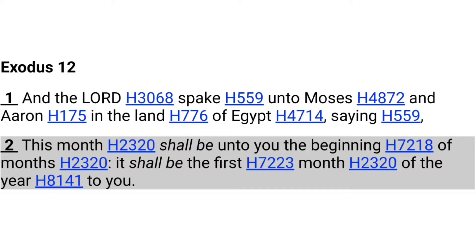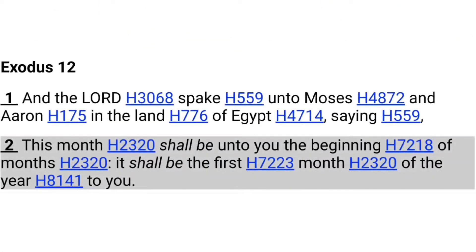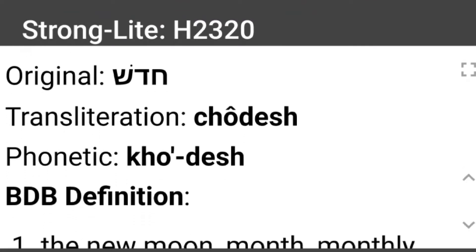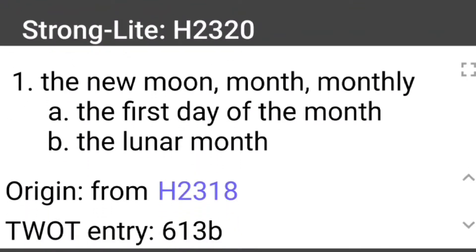In Ecclesiasticus 43:8 we had the word 'month,' so let's break down this Hebrew word 'month' using Exodus 12:2. It reads: 'This month shall be unto you the beginning of months; it shall be the first month of the year to you.' Going into the concordance, the Hebrew word for 'month' is H2320 — kodesh, or chodesh. It means: the new moon, the month, monthly, the first day of the month, the lunar month. So we see that the word 'month' means new moon.